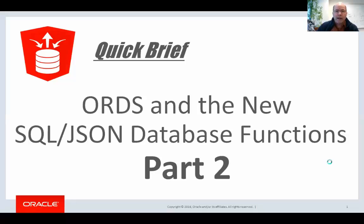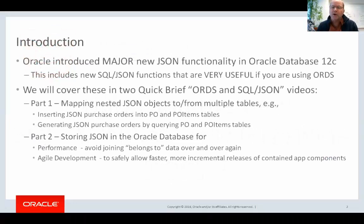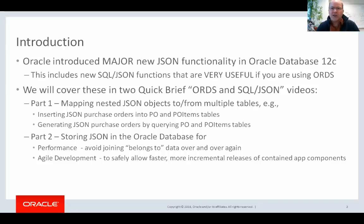To repeat what I said last time, Oracle introduced major new JSON functionality in Oracle Database 12c, which is the latest release of the database. This includes new SQL JSON functions that are really useful for using ORDS. In the first part, I talked about mapping nested JSON objects to and from multiple tables — using JSON to exchange data between your application client and database, particularly when the data is nested. I went through an example of purchase orders where each purchase order had an array of purchase order items as a child table, and how you can use these functions to do the mapping, to do an insert, and to generate using queries.